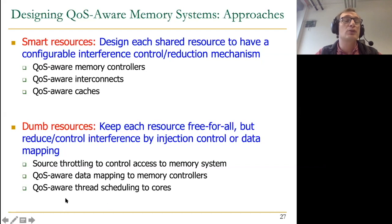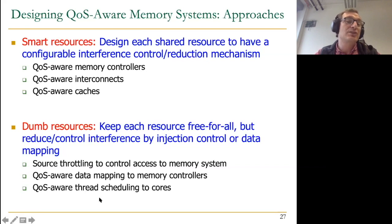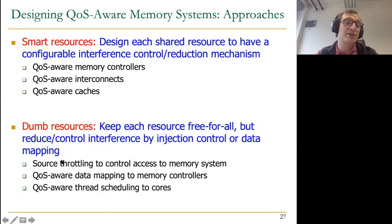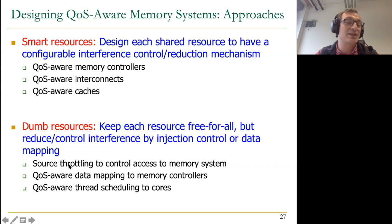Data mapping to different memory controllers — memory channel partitioning — is one example of the dumb resources approach. Thread scheduling to core is another: if two threads are badly interfering with each other, why not schedule them to separate chips so they don't interact? That works if you have enough threads to keep your resources busy. These approaches — thread scheduling, data mapping, source throttling — don't mess with the algorithms in the memory controllers, interconnects, and caches. Instead, they do something else to reduce or control interference. And these two approaches can be combined, as memory channel partitioning from MICRO 2011 and the source throttling paper from ASPLOS 2010 show.